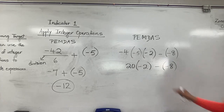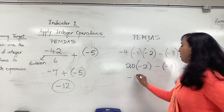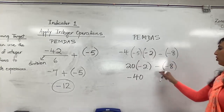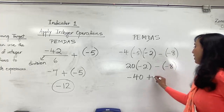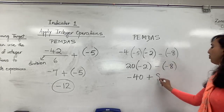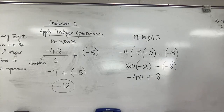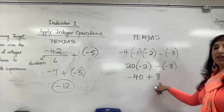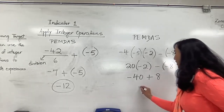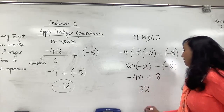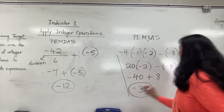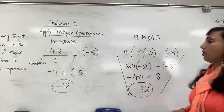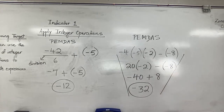Now I have negative 40 minus negative 8. As we talked before, subtracting a negative means adding the opposite, so minus negative 8 becomes plus positive 8. Now I have opposite signs, so I take the absolute value of each: 40 minus 8 is 32. The sign belongs to the bigger number, which is negative, so my answer is negative 32. Do all the steps so that we are not missing anything and not making mistakes.